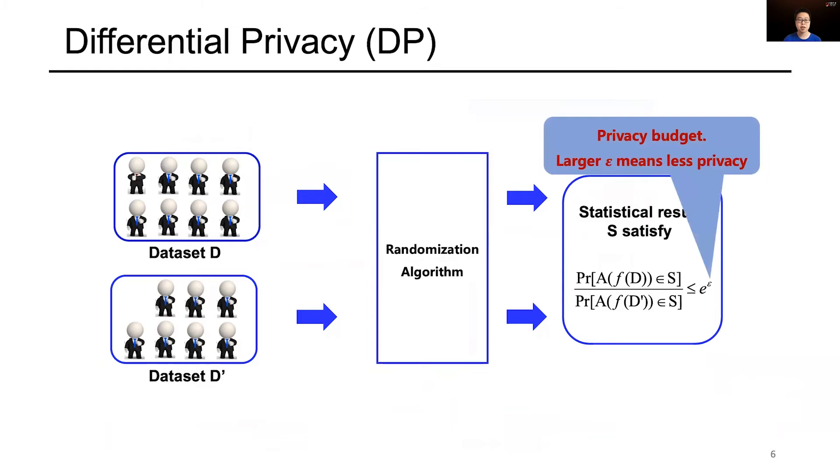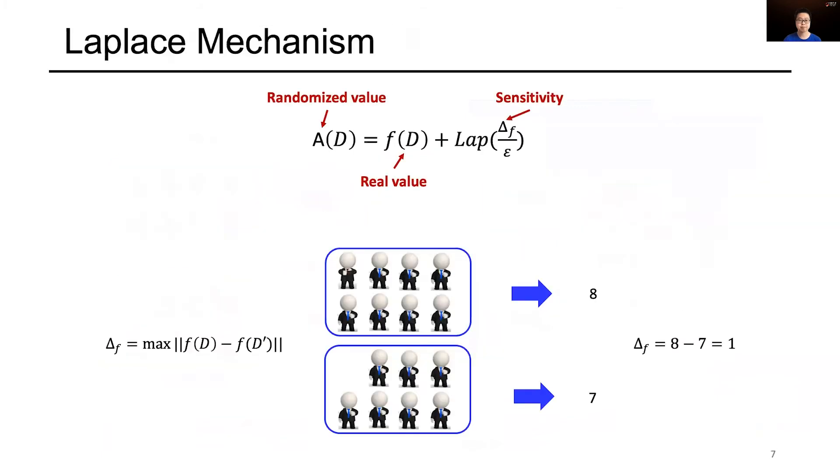In DP, we call epsilon the privacy budget. Normally, larger epsilon means less privacy.